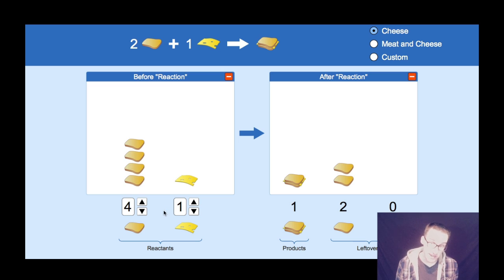I'm limited in the number of sandwiches I can make by the amount of cheese that is present. After this reaction occurs, I can only make one sandwich and I'll have two slices of bread that will be unreacted or left over or in excess.